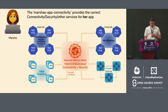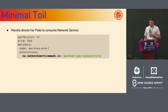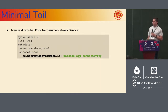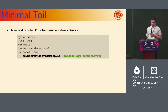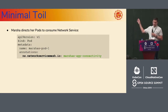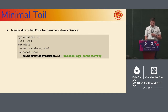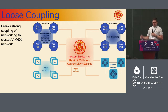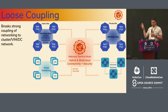So essentially we have this 'Marsha's app connectivity' network service that she can request. From the minimal toil point of view, all she has to do is annotate her deployment manifest with a special label where she requests a specific network service, and then Network Service Mesh takes over and provides all the connectivity. Of course, someone has to implement the network service beforehand — it doesn't work magically. From the loose coupling perspective, you don't bind to your inter-domain connectivity; you're decoupled and just have connectivity between your workloads.